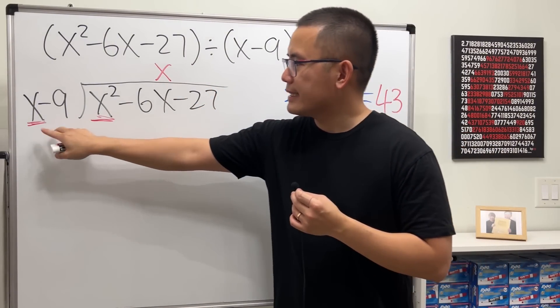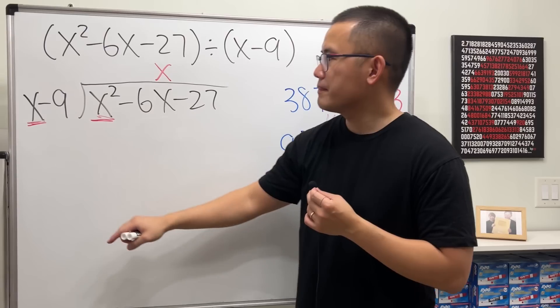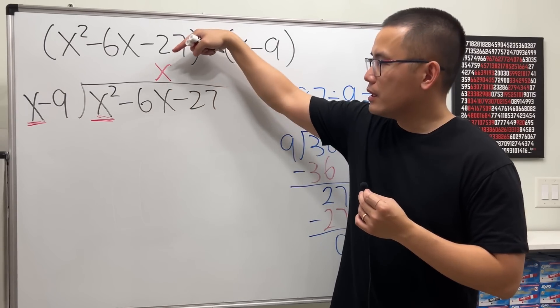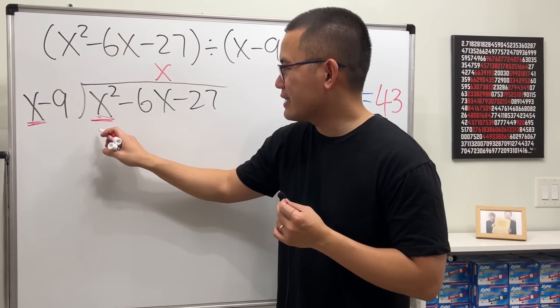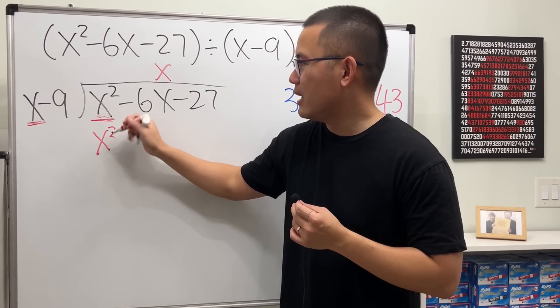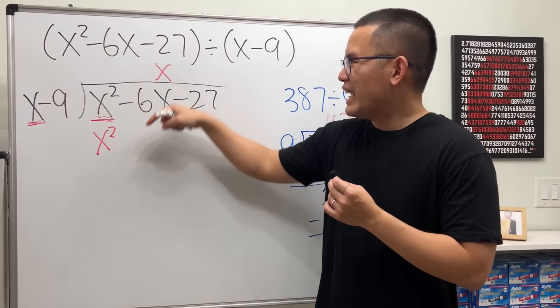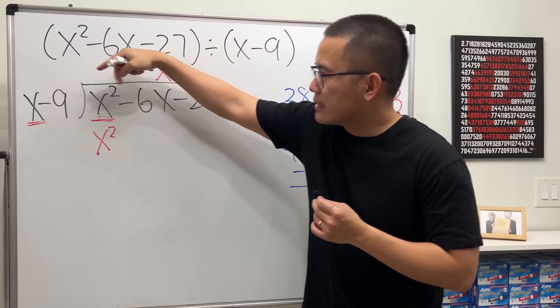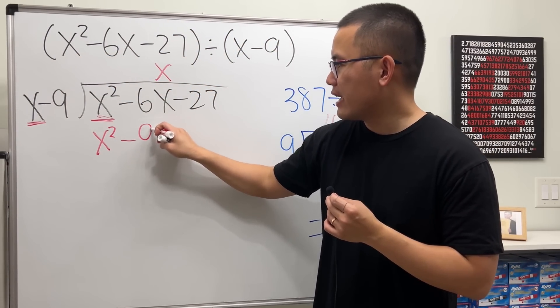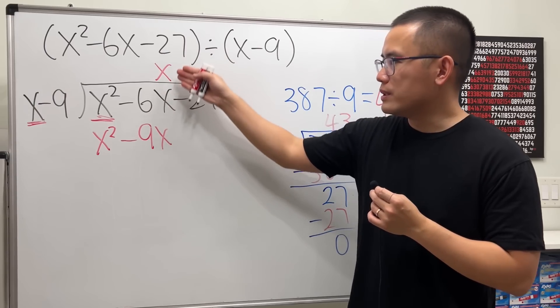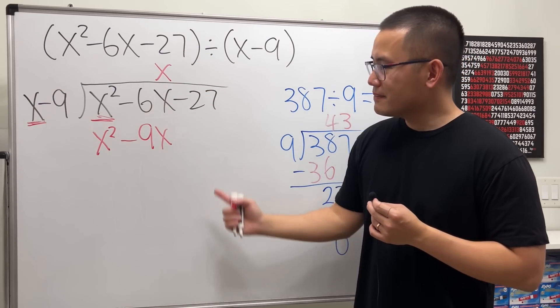Notice it has two terms, x minus 9. Once you put on the x, you take the x, multiply with this x, which is x squared. Write that down here. Line up. And then x times negative 9, you also do that, and you get negative 9x. You line up with the x term. So just like that.